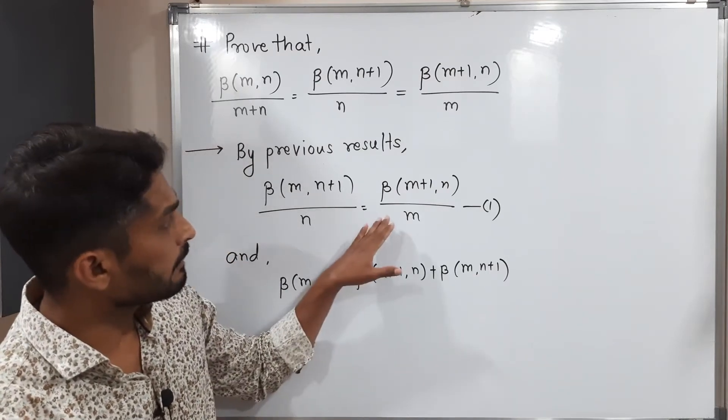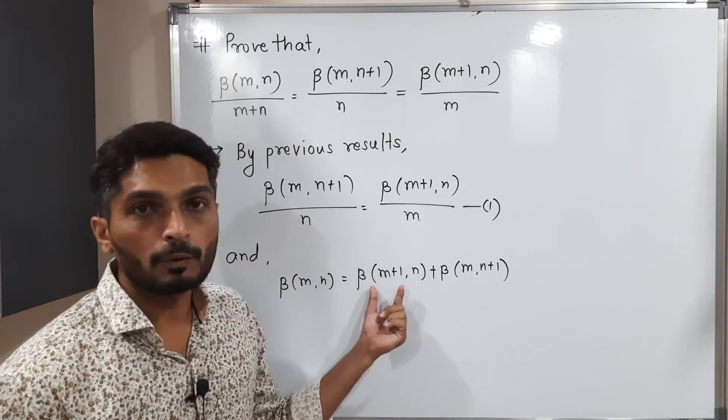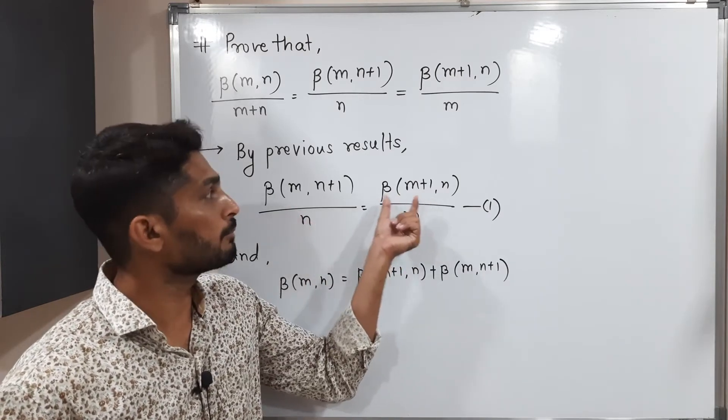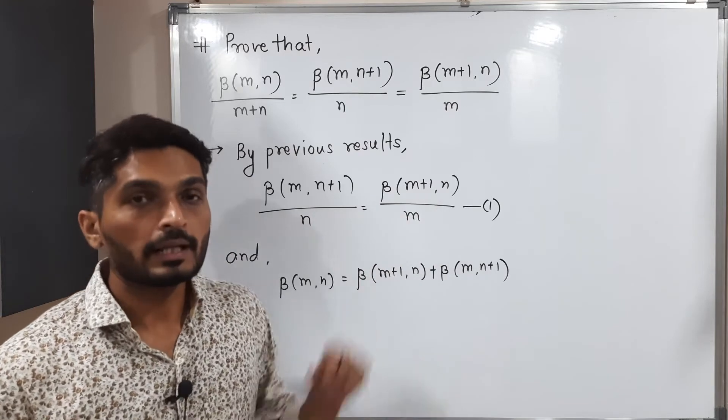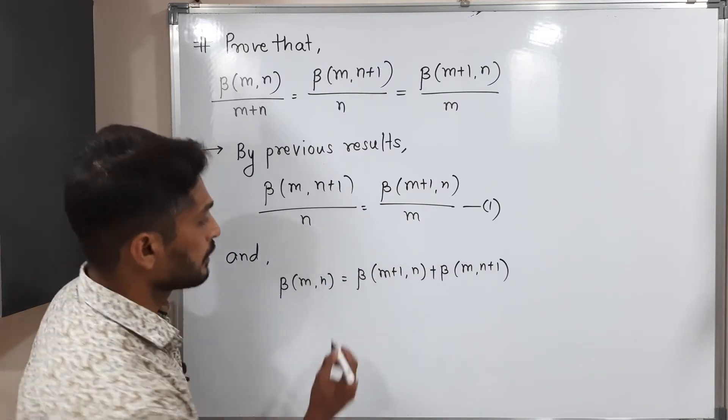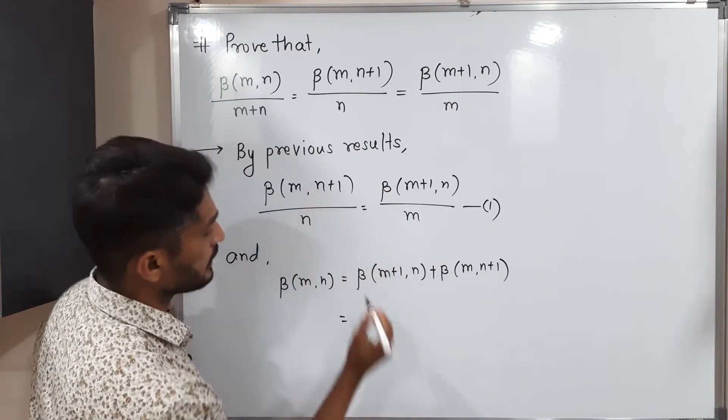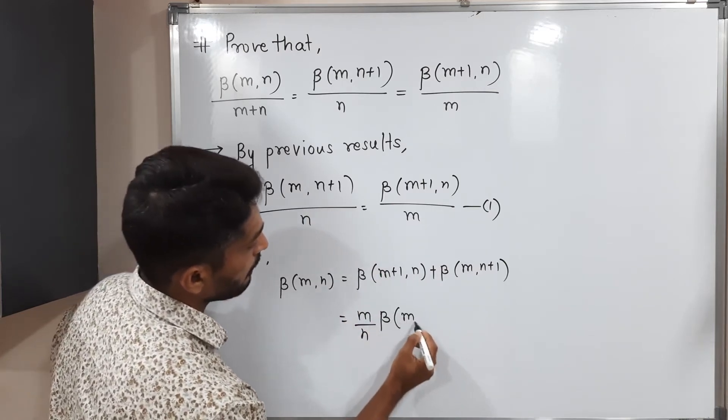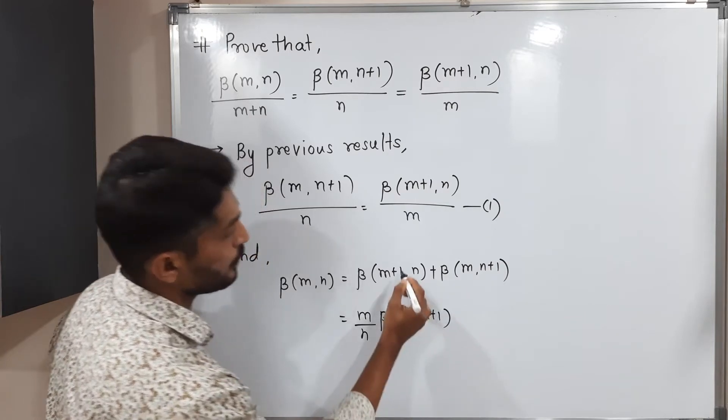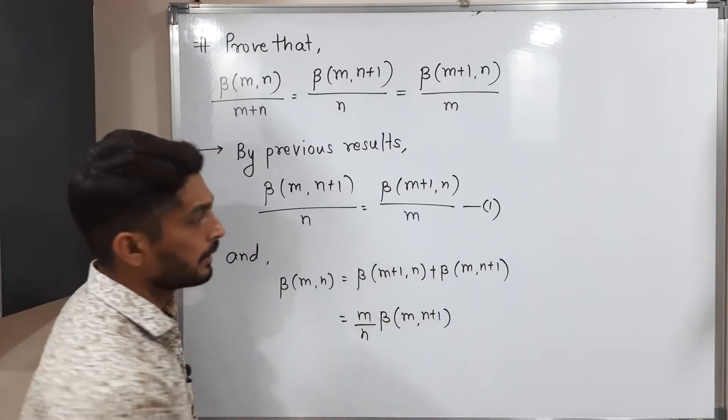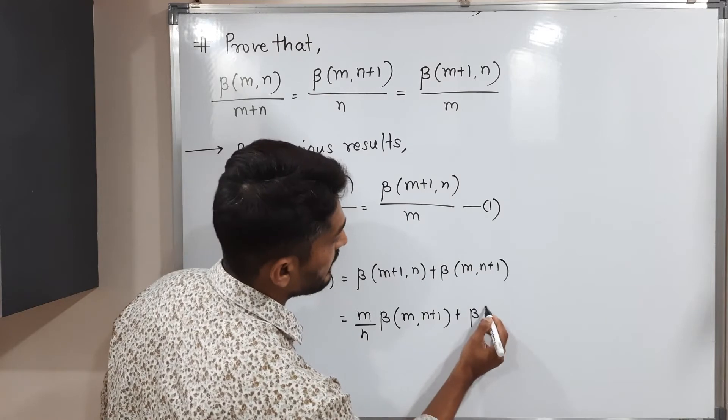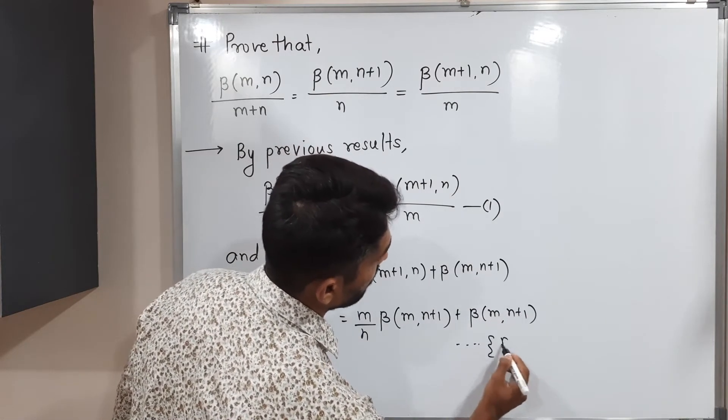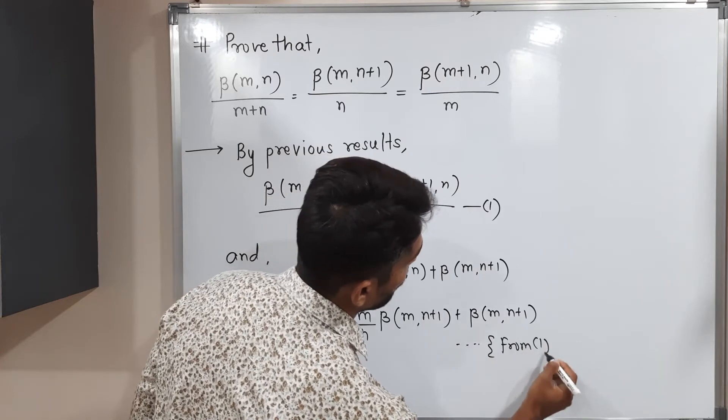Using equation 1, what can we say about beta of m+1, n? If I shift m on this side, we can get the value of beta of m+1, n. Let us put that value here. This is equal to m/n times beta of m, n+1. We replace the first term by this one, plus the second term as it is: beta of m, n+1 from equation 1.